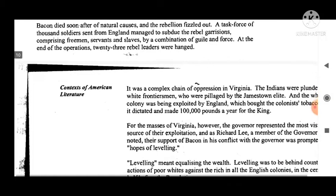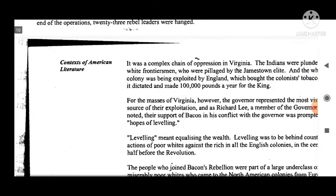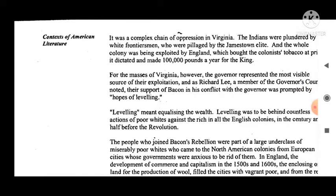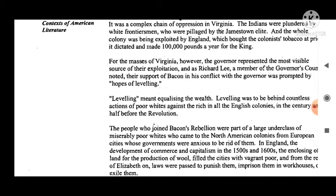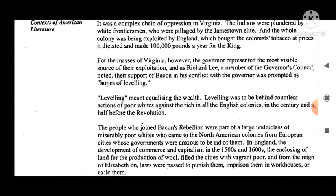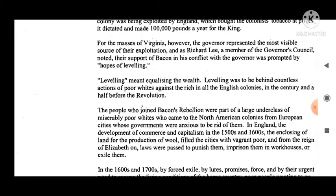A task force of a thousand soldiers sent from England managed to subdue the rebel garrisons — comprising freemen, servants, and slaves — by a combination of guile and force. At the end of the operation, 23 rebel leaders were hanged. It was a complex chain of exploitation in Virginia: the Indians were plundered by white frontiersmen, who were piled upon by the Jamestown elite, and the whole colony was being exploited by England, which bought the colony's tobacco at prices it dictated and made a hundred thousand pounds a year for the king.